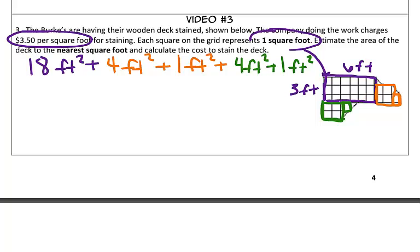When I add that all up together, I have 18 and 4, which is 22, and 1 is 23, and 4 is 27, and 1 is 28. So this total right here of these perfect squares is 28 feet squared.